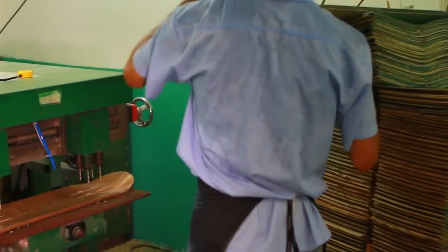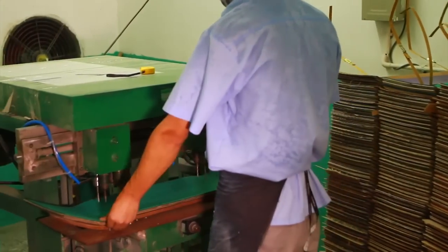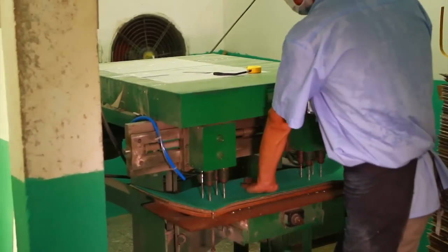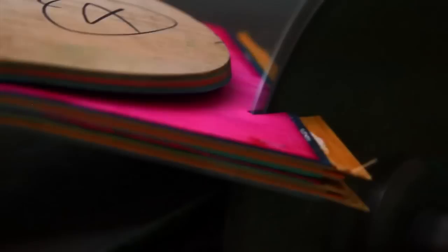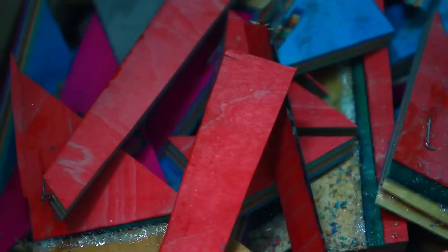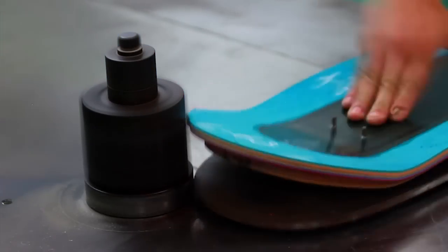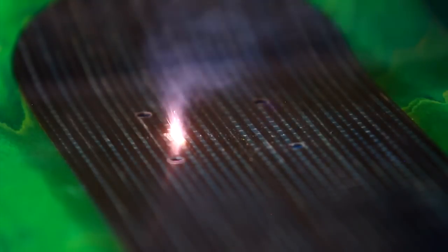Once boards have rested long enough after pressing, they re-enter the shop where bolt holes are drilled to an exact position. These holes are then used to attach one of many various templates to cut the boards into shape. Edges are then cleaned and beveled before the deck receives a protective coat of lacquer and laser etching. And from here, it's off to the graphics department.